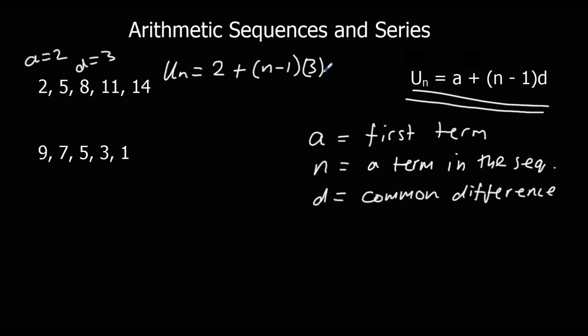If we substitute any value of n in, we can find out a term in the sequence. If I wanted to find the tenth term, we can write u10, this is a notation. The tenth term is 2, plus 10 minus 1, times 3, which is 2 plus 9 times 3, which is 2 plus 27, which is 29. We can find any term in the sequence using this formula.